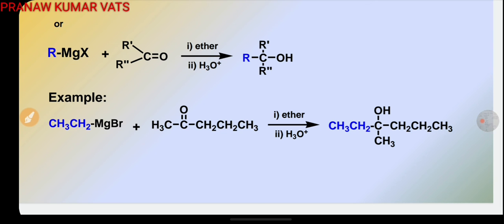How many carbons are there? One, two, three, four, five - pentan-2-one is giving CH3CH2C(CH3)(CH2CH2CH3)OH. What will be the IUPAC name of this compound? IUPAC name will be - there is a chain of six carbons - so 3-methylhexan-2-ol.